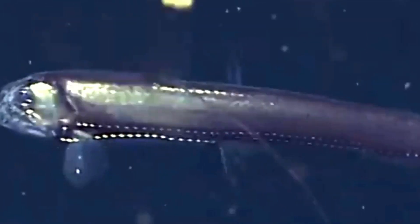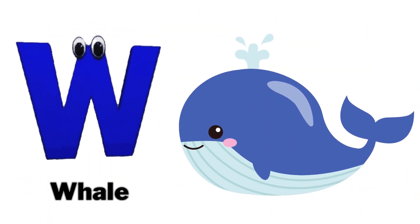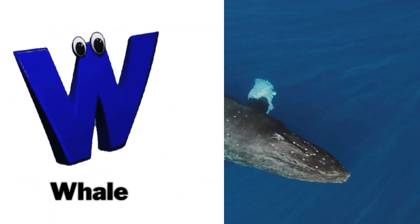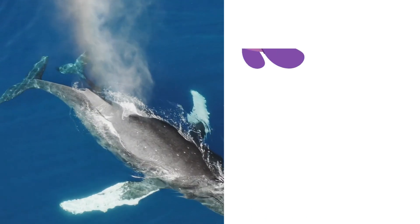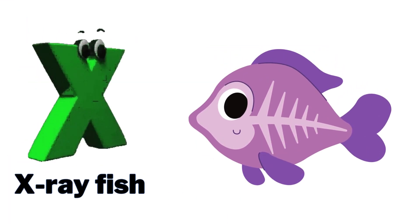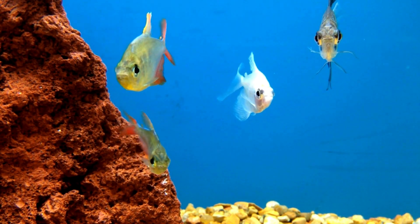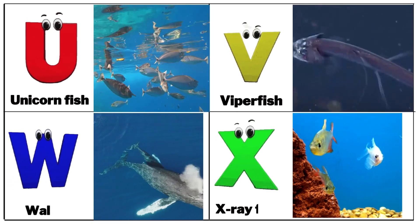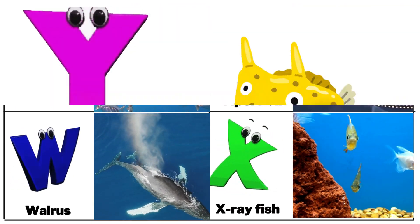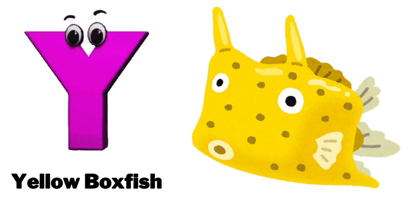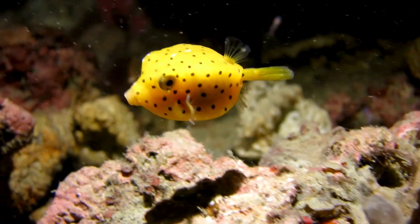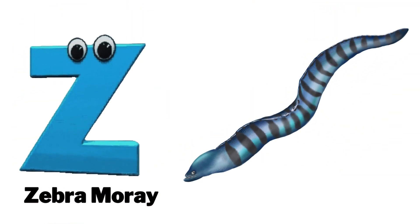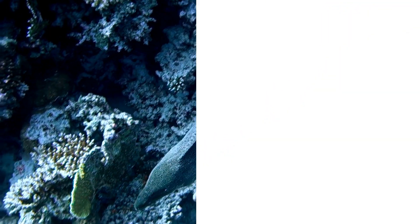W is for whale. X is for x-ray fish. Y is for yellow boxfish. Z is for zebra moray.